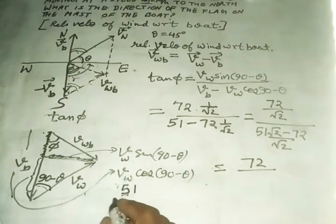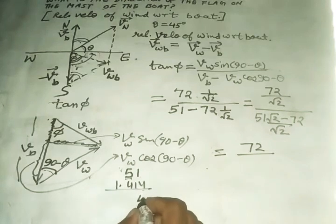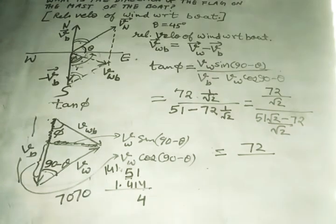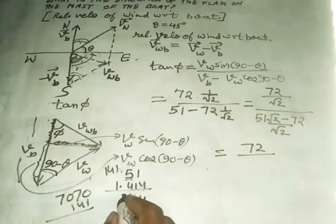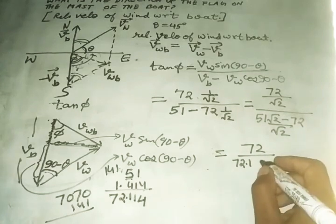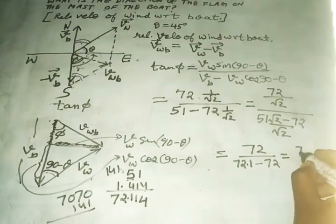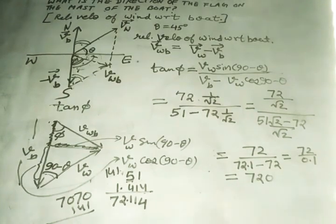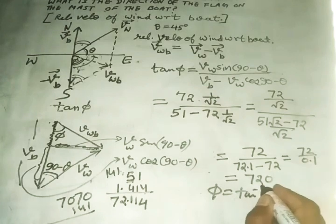A little bit of algebra. This becomes 51√2 minus, the value of √2 is also given, so this cancels. Now it will be 72 upon 51 into √2. 51 into √2, √2 is 1.414, multiply. This becomes 7070. Add 141, so it will be 7211. Three decimal places, so this is 72.1, rounding off minus 72. So it gives a very large value actually, 72 upon 0.1 which is nearly equal to 720.